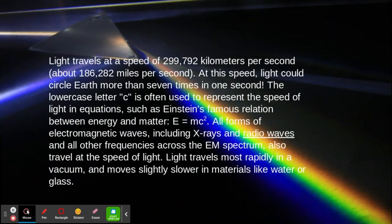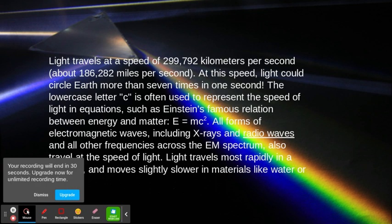Light travels at a speed of 299,792 kilometers per second, about 186,282 miles per second. At this speed, light could circle Earth more than seven times in one second.